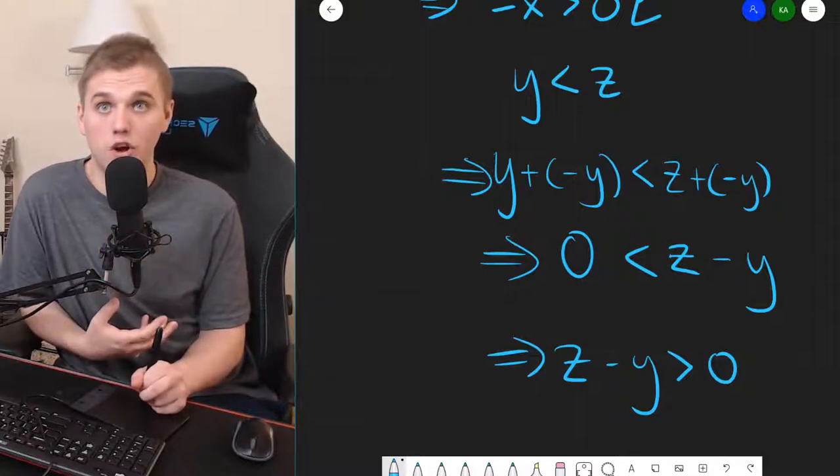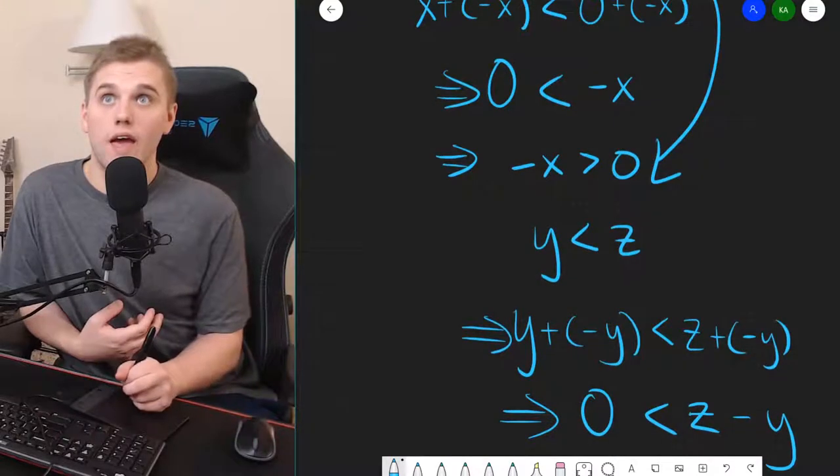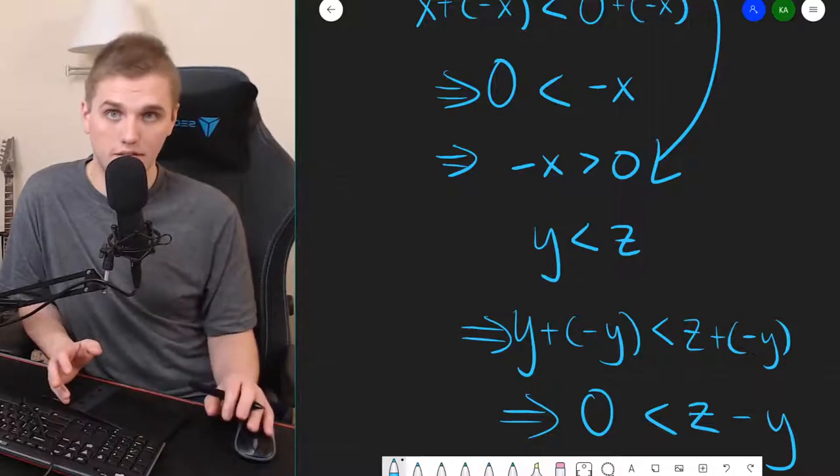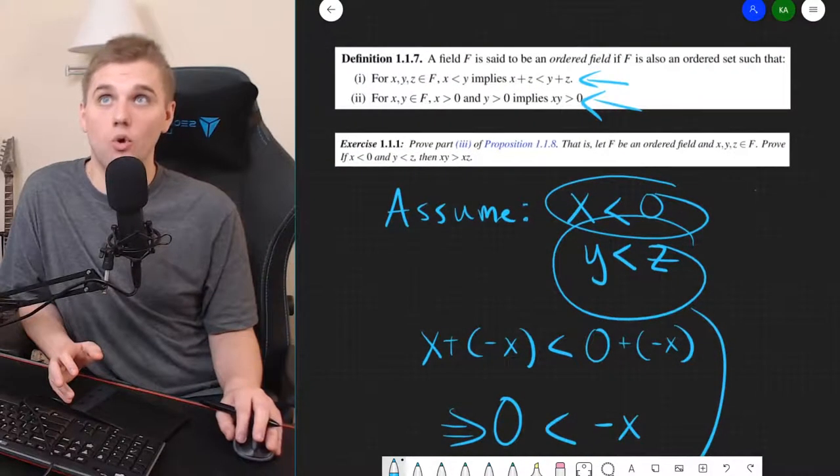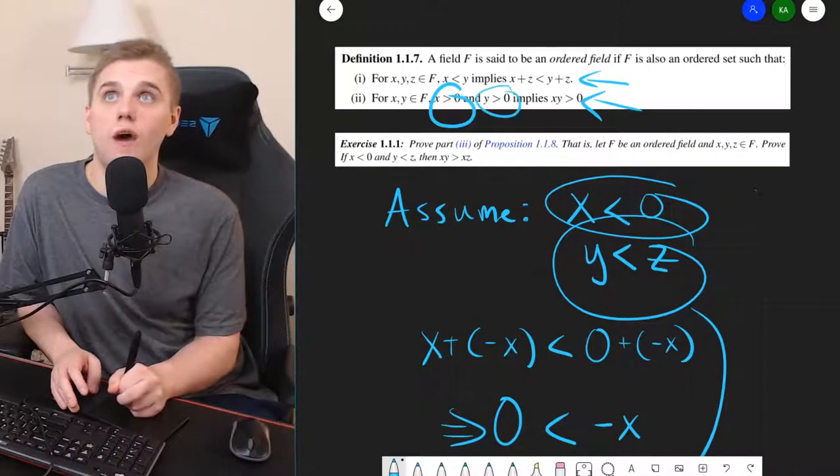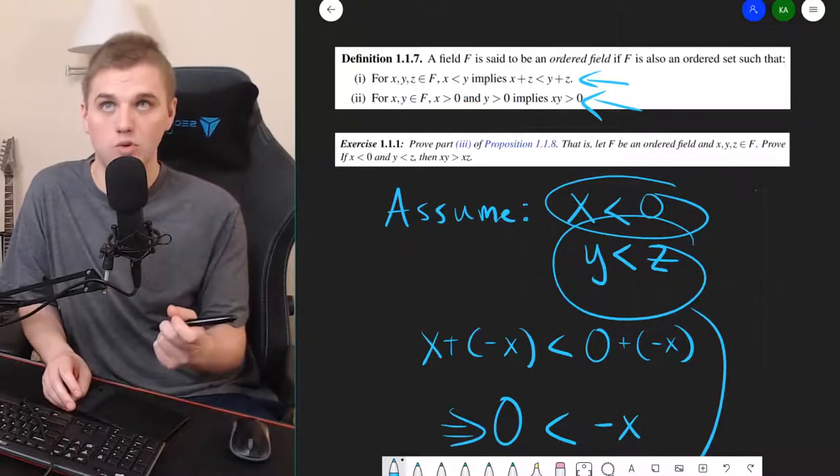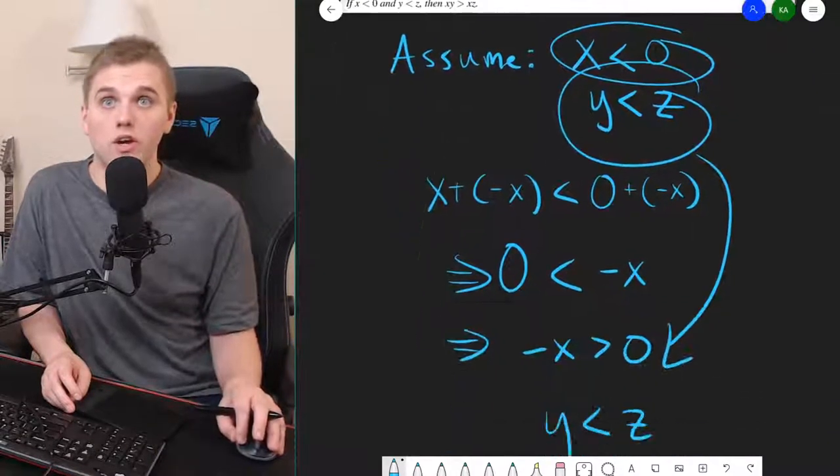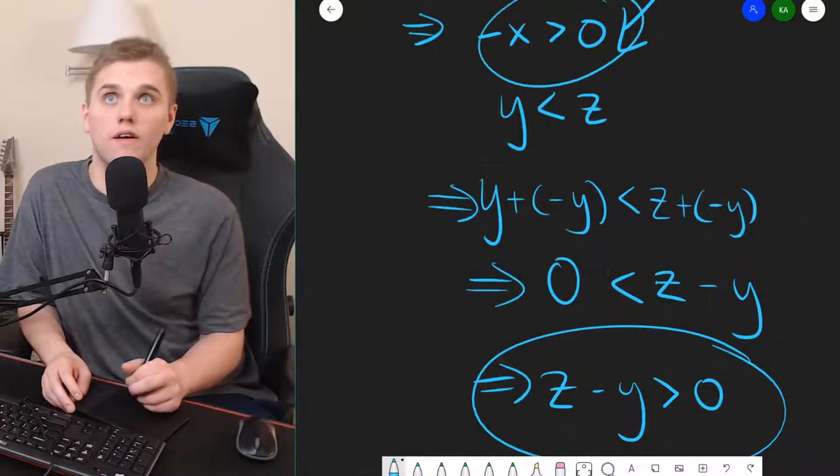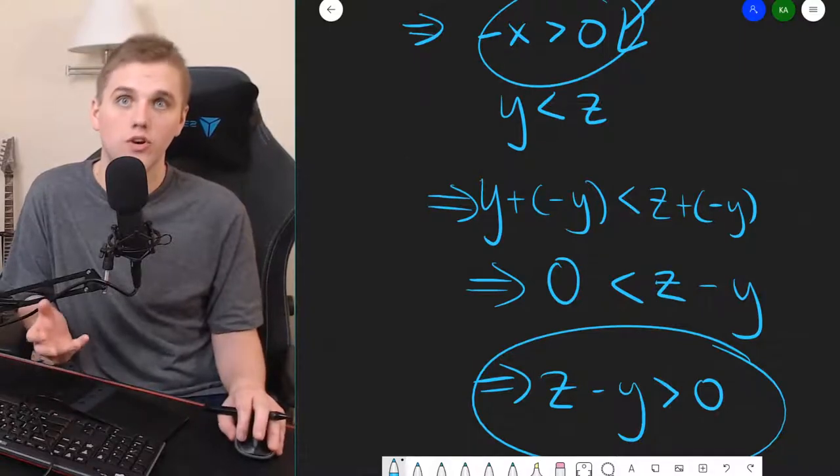So, now, I want you to notice that we have two numbers, z minus y, and negative x that are guaranteed to be positive. And so, by the second property of an ordered field, if we have two elements in our field that are both greater than zero, that implies that the multiplication of those two elements is also greater than zero. So, I can take these two numbers that are greater than zero here in the circles, and I can multiply them together and know that that number is also greater than zero.